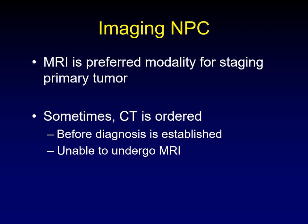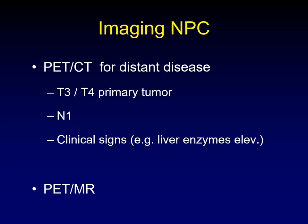How do we image nasopharyngeal carcinoma? MRI is the preferred modality for staging the primary tumor — it does a much better job showing extent of disease into bone and soft tissue. Sometimes you end up with a CT, usually before a definitive diagnosis or in patients unable to undergo MRI. PET-CT is not useful for the primary tumor, but it is useful for identifying distant disease. You need it when you have a T3 or T4 primary tumor, when you have nodal disease (N1 is enough), or if there are clinical signs suggesting metastatic disease — a classic example being elevation of liver enzymes, because hepatic metastases are reasonably common.